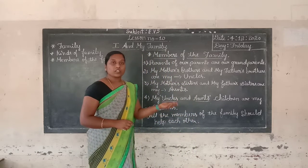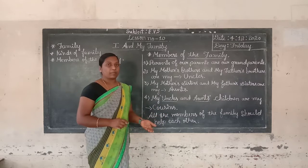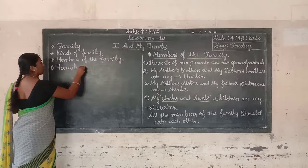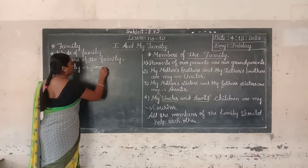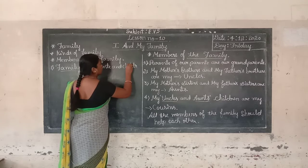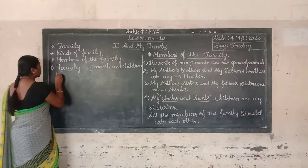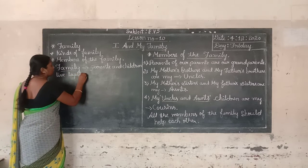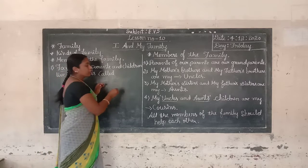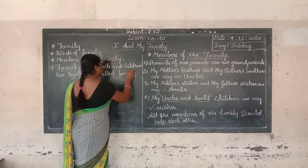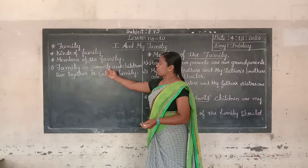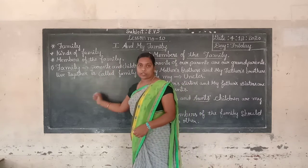So what is family? Parents and children live together, it is called family. Family means parents and children live together, it is called family.